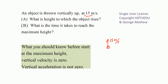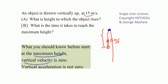Because of acceleration due to gravity, the object's speed is going to decrease. The velocity becomes zero at the maximum height. So we want to know what is this distance and what is the time it takes to reach the maximum height. At the maximum height, vertical velocity is zero — instantaneously, it comes to a stop.